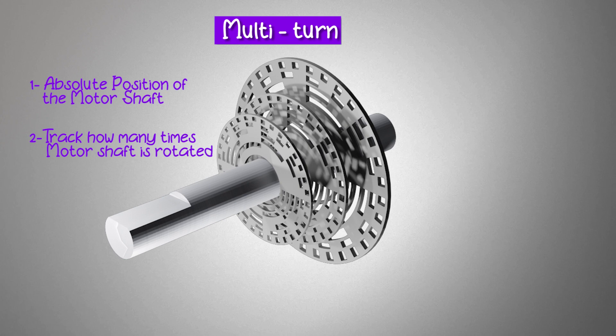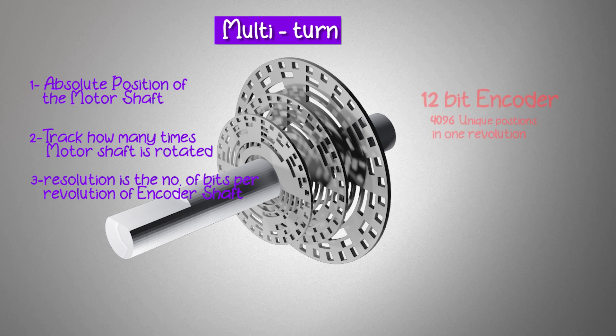The resolution of these encoders is usually specified as the number of binary bits available per turn. For instance, a 12-bit encoder would have 4096 unique positions, similar to 4096 pulses per revolution in the incremental encoder as discussed in the previous video.